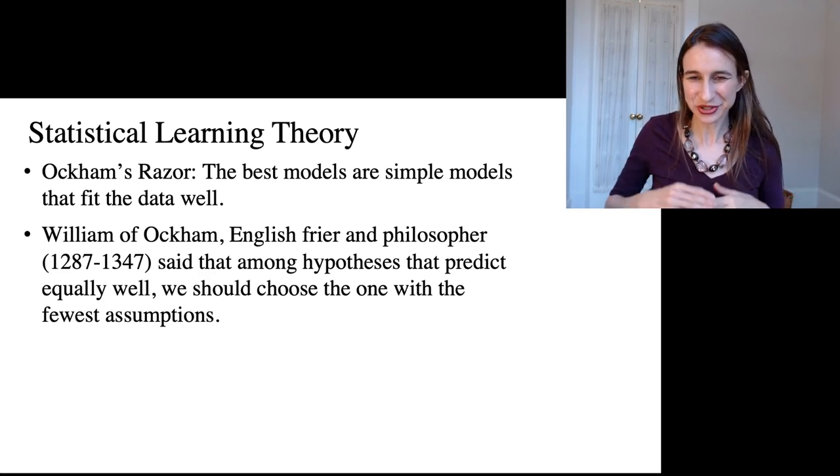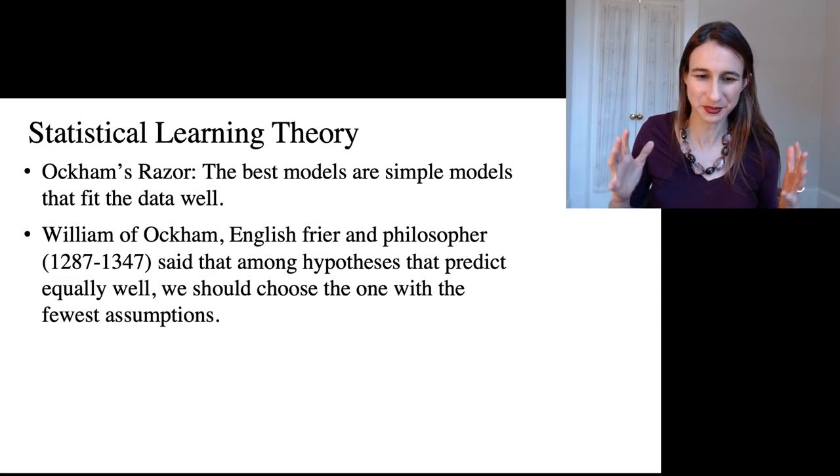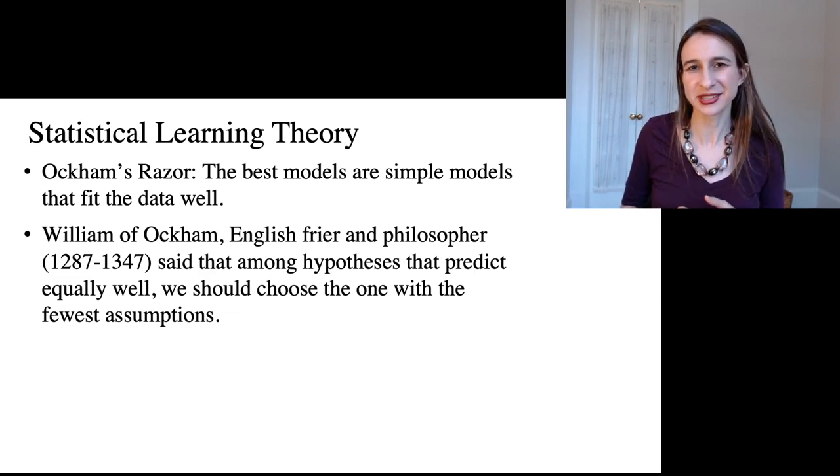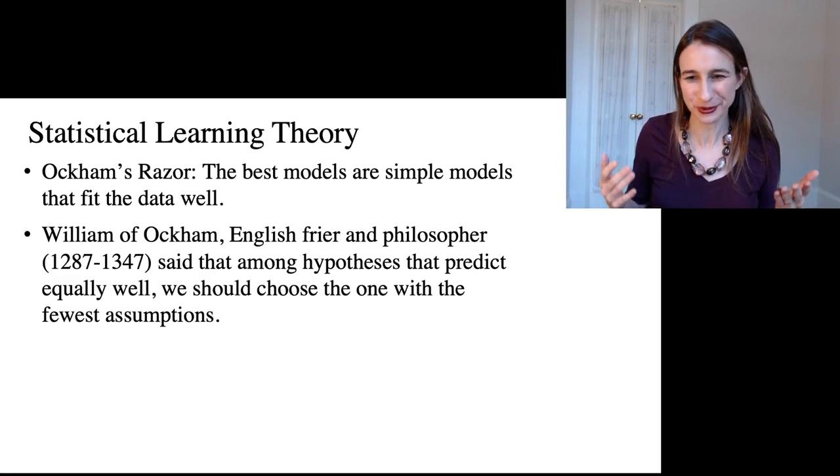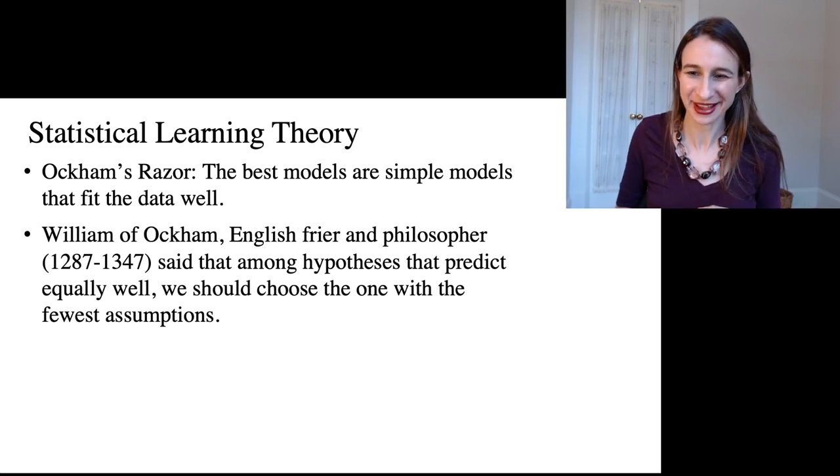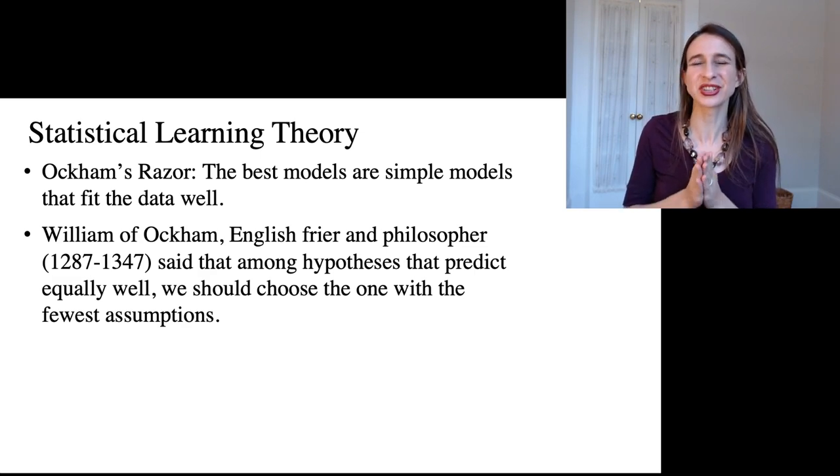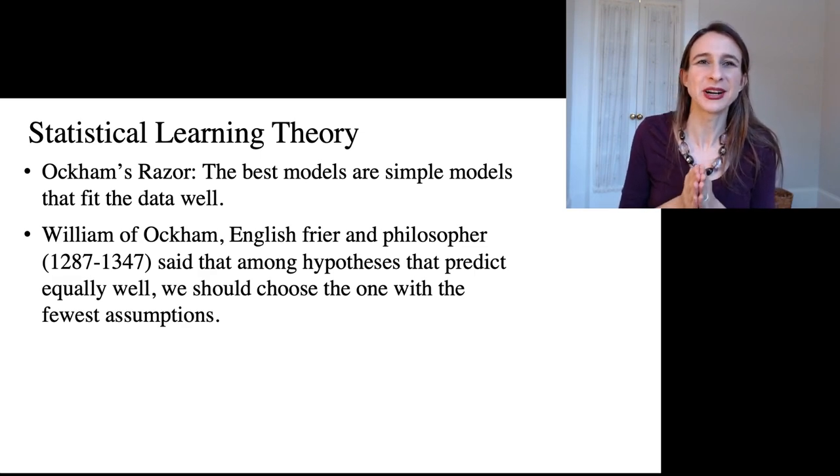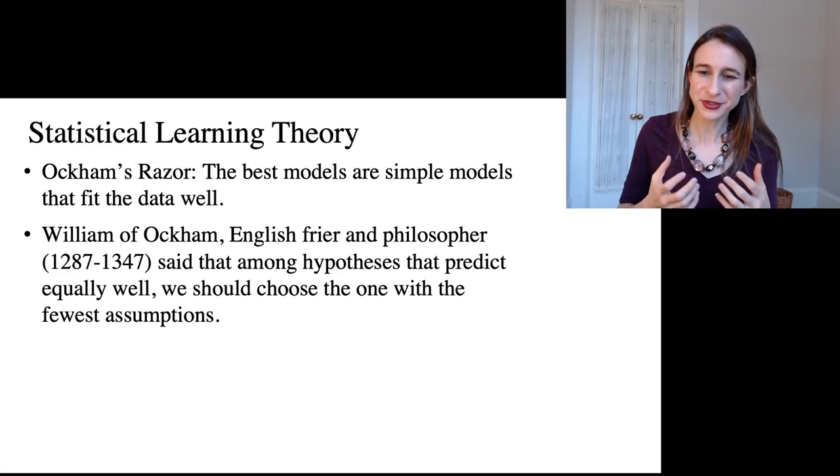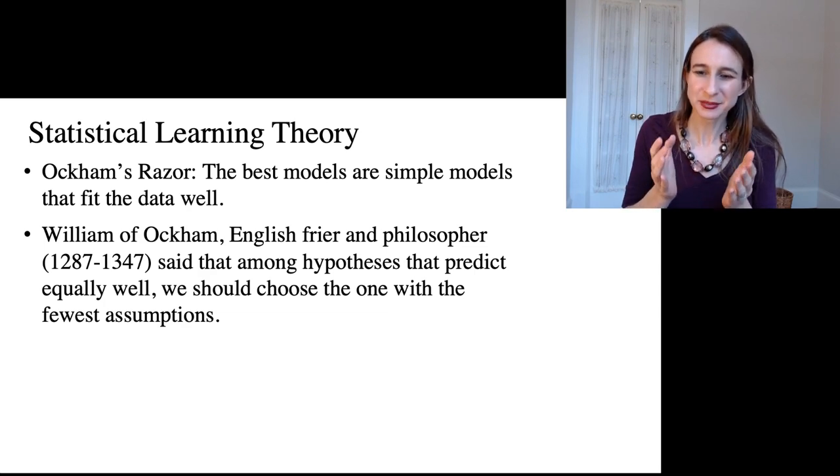And it's attributed to William of Occam, who had no clue what machine learning was. But he simply said that among all hypotheses that predict equally well, we should choose the one with the fewest assumptions. And I love this whole idea because it essentially forces us as machine learning people to formalize the notion of what simplicity means.